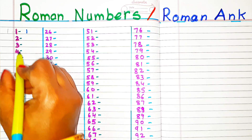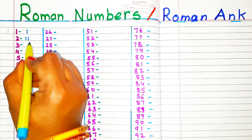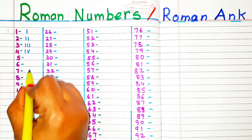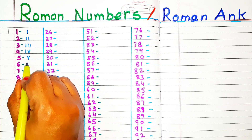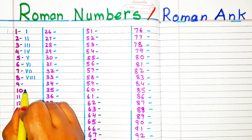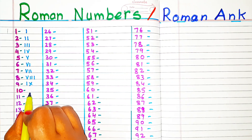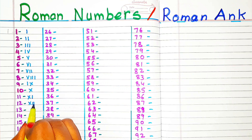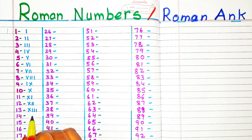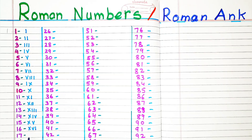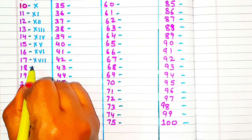1: I. 2: II. 3: III. 4: IV. 5: V. 6: VI. 7: VII. 8: VIII. 9: IX. 10: X. 11: XI. 12: XII. 13: XIII. 14: XIV. 15: XV. 16: XVI. 17: XVII. 18: XVIII.